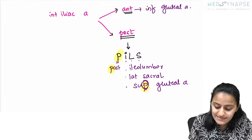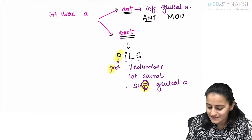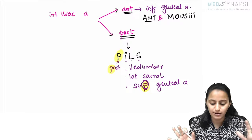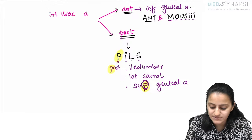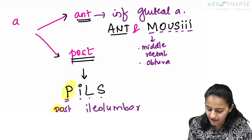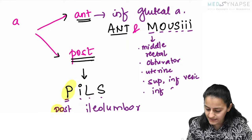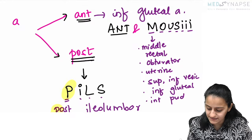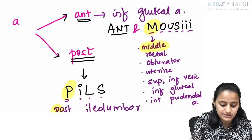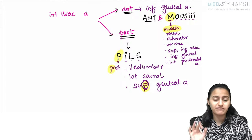For the anterior division of the internal iliac — remember 'ant and mouse': the ant-and-mouse story is the anterior division branches. MOUSEY: M for middle rectal artery (not superior or inferior rectal), O for obturator, U for uterine, S for superior and inferior vesical artery, E for inferior gluteal artery, Y for internal pudendal artery. So the middle rectal artery comes from the anterior division only.